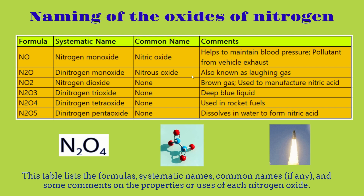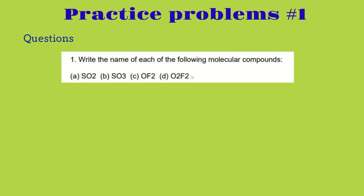This table lists the formulas, systematic names, and common names — if any — along with some comments on the properties or uses of each nitrogen oxide. Nitrogen and oxygen are a perfect example of binary molecular compounds, which is why we covered them in this video. Now we're going to go over some practice problems to see if we understand the material. For question one, write the name of each of the following molecular compounds. Feel free to pull up your periodic table and pause the video to try these yourself.